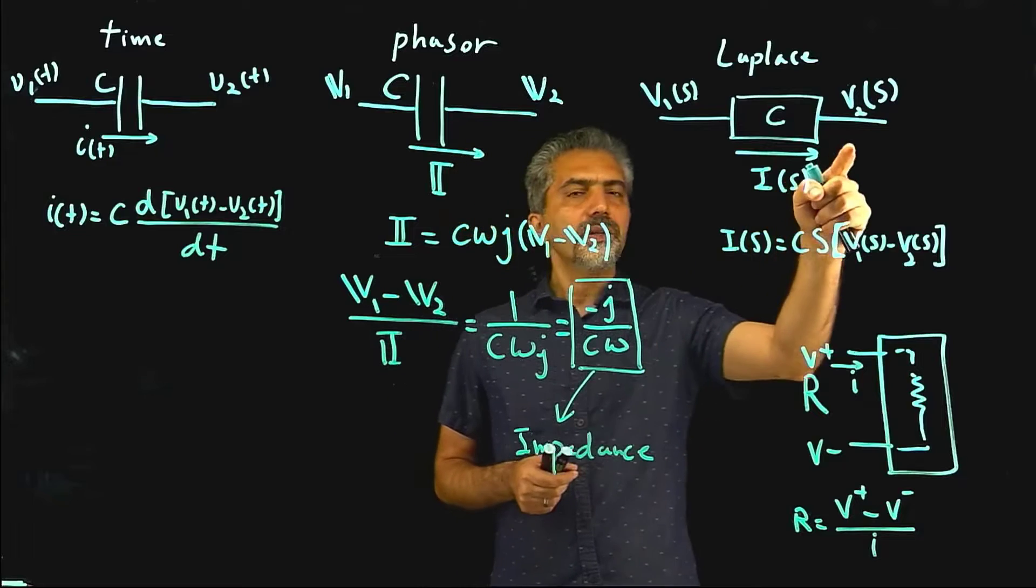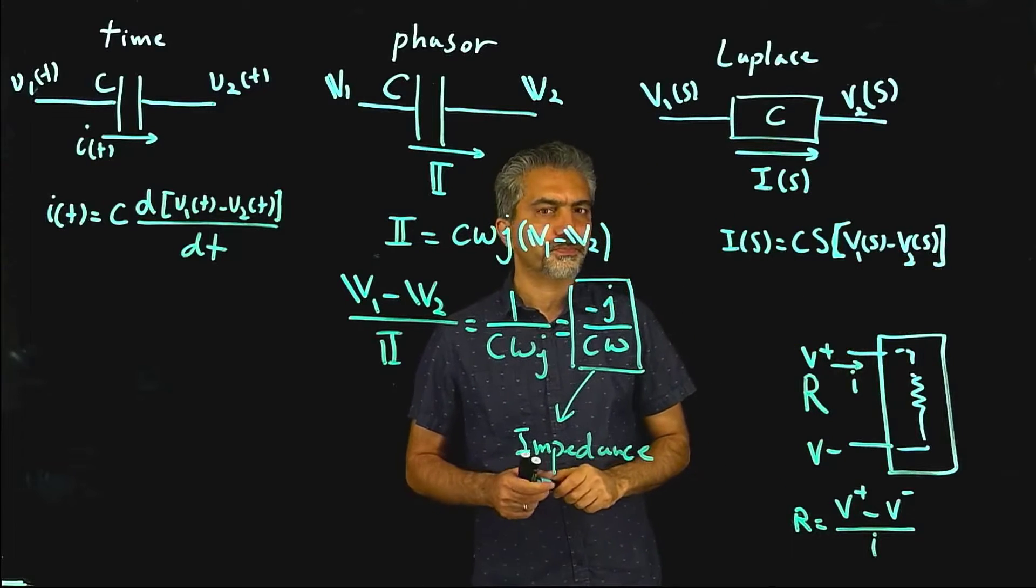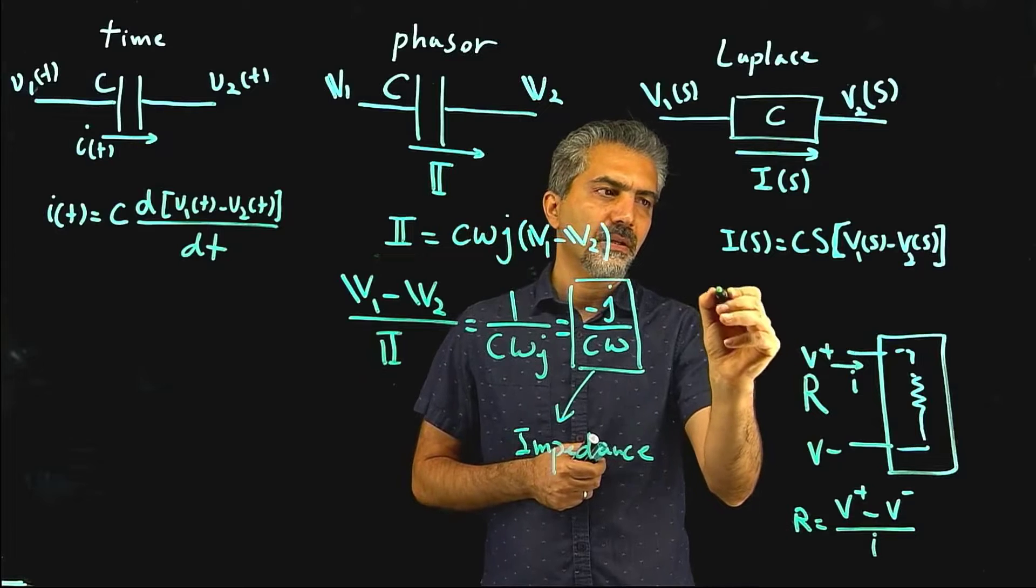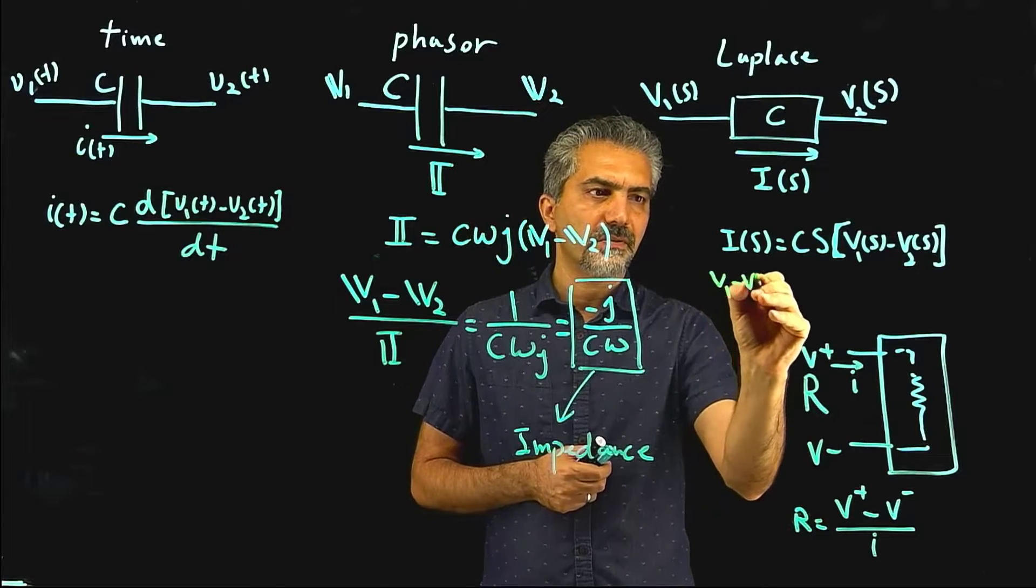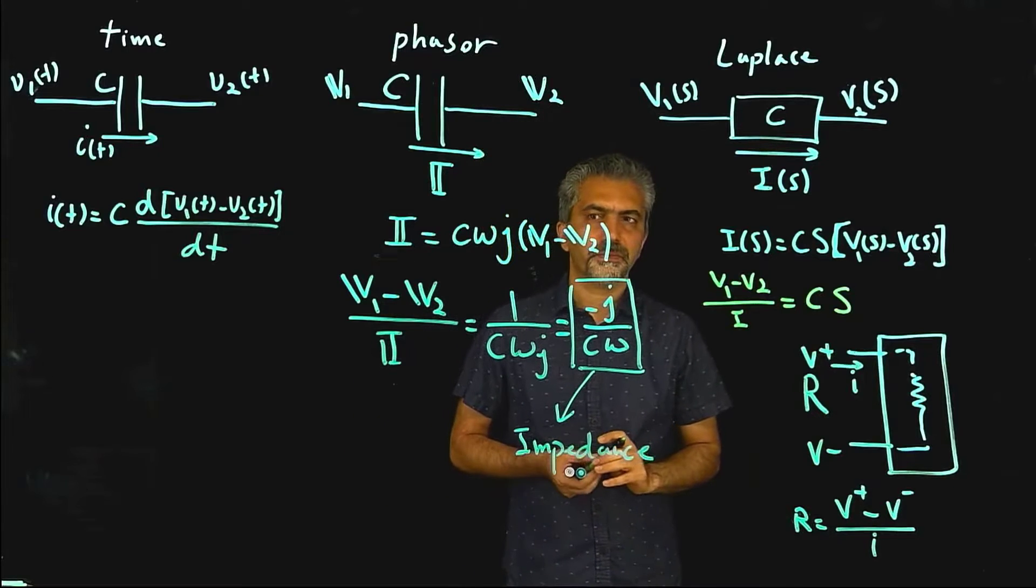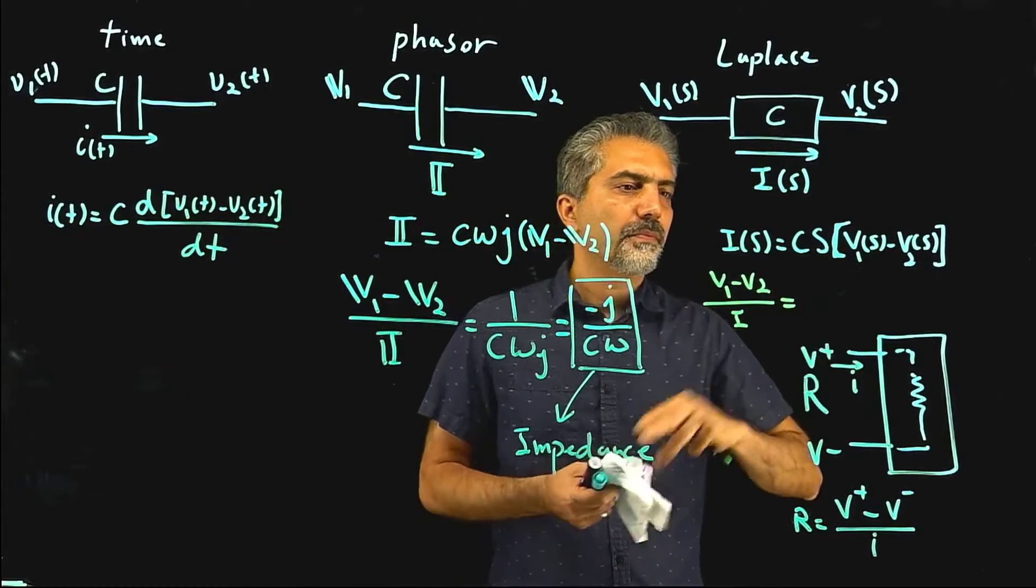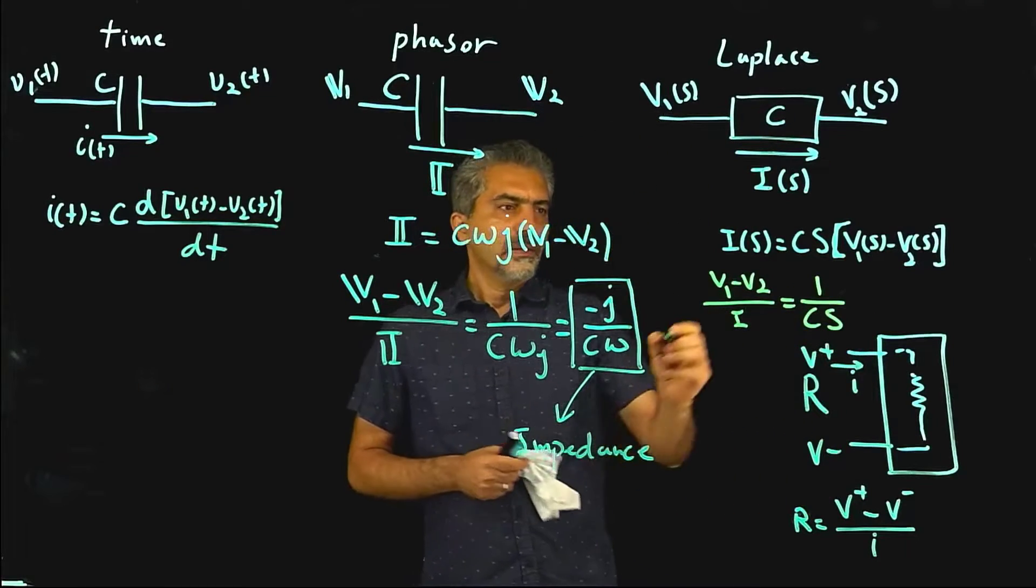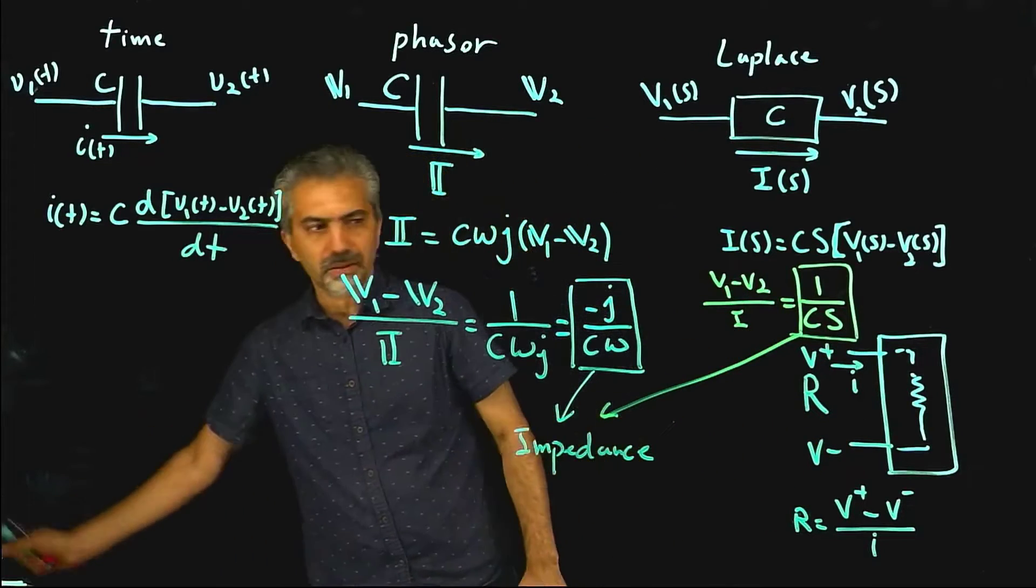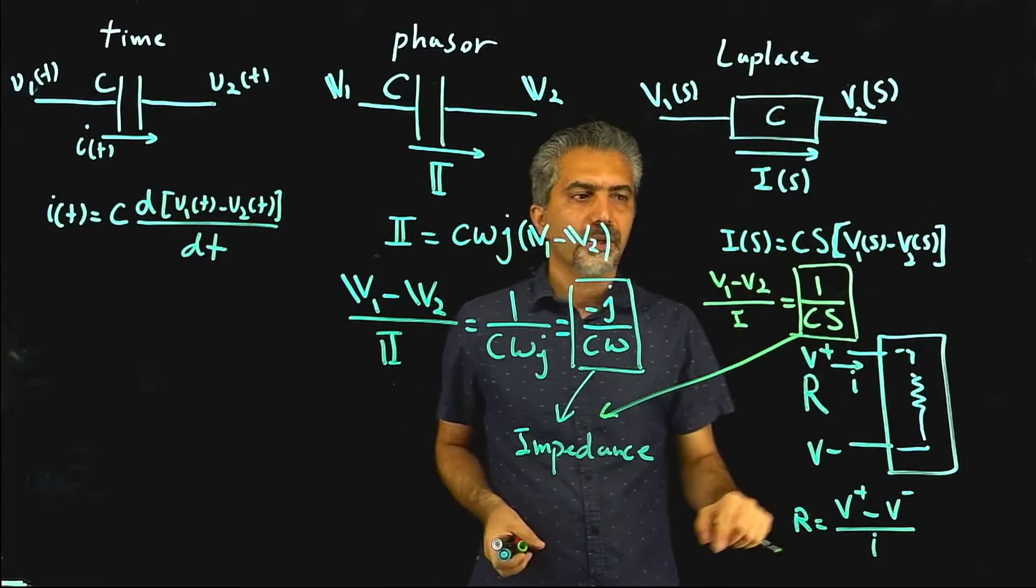With that in mind, if you notice now in the Laplace domain, the same thing has happened, assuming that there is no initial condition obviously. This is the equation for the capacitor. So here again, what I can do is to write the definition here, v1 minus v2 divided by i becomes just simply 1 over c s. Now I can do the same thing that I did before, and call that same thing. This would be the impedance, and the impedance is actually the voltage difference divided by the current, but in the domain of Laplace or the s domain.